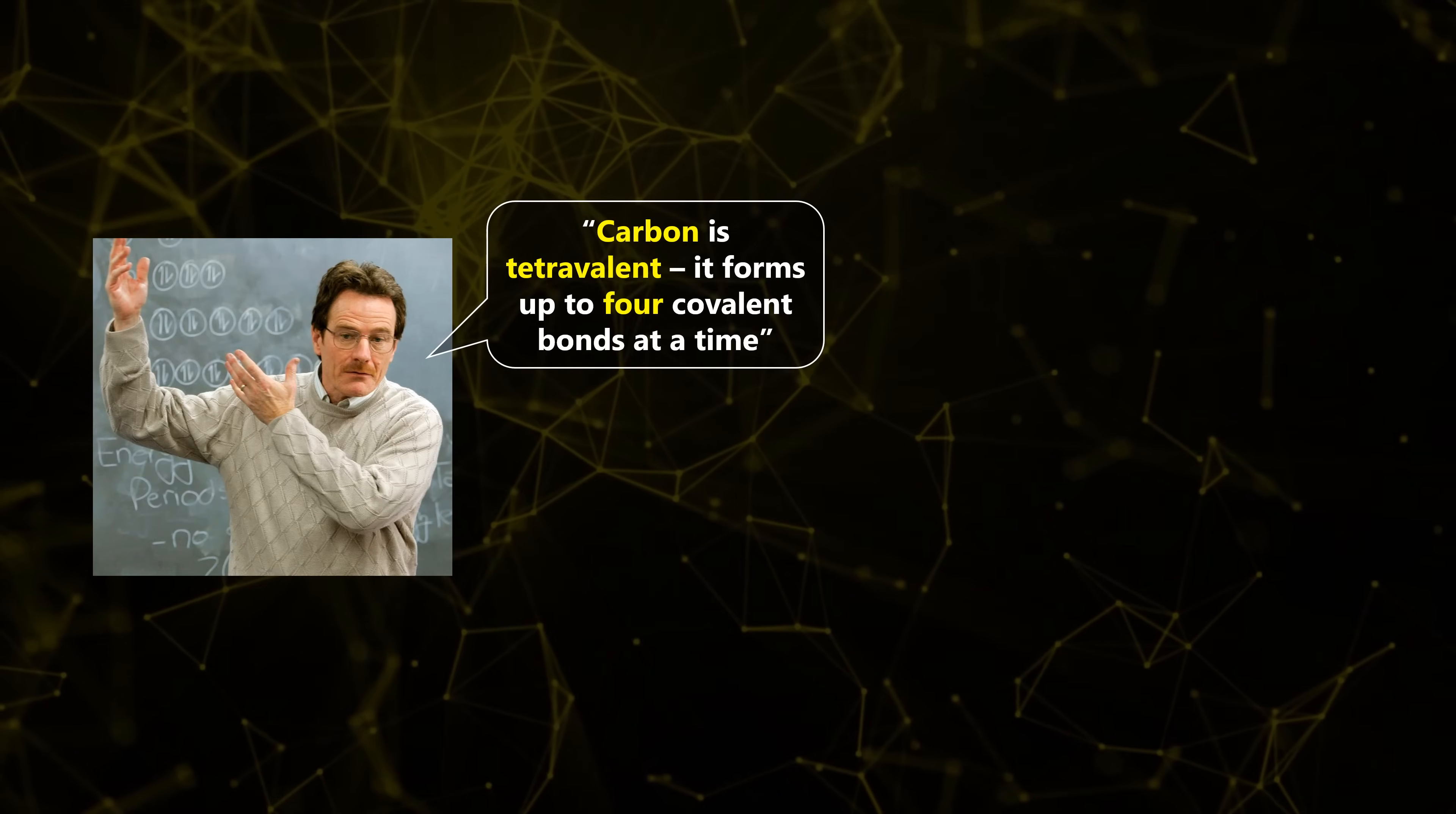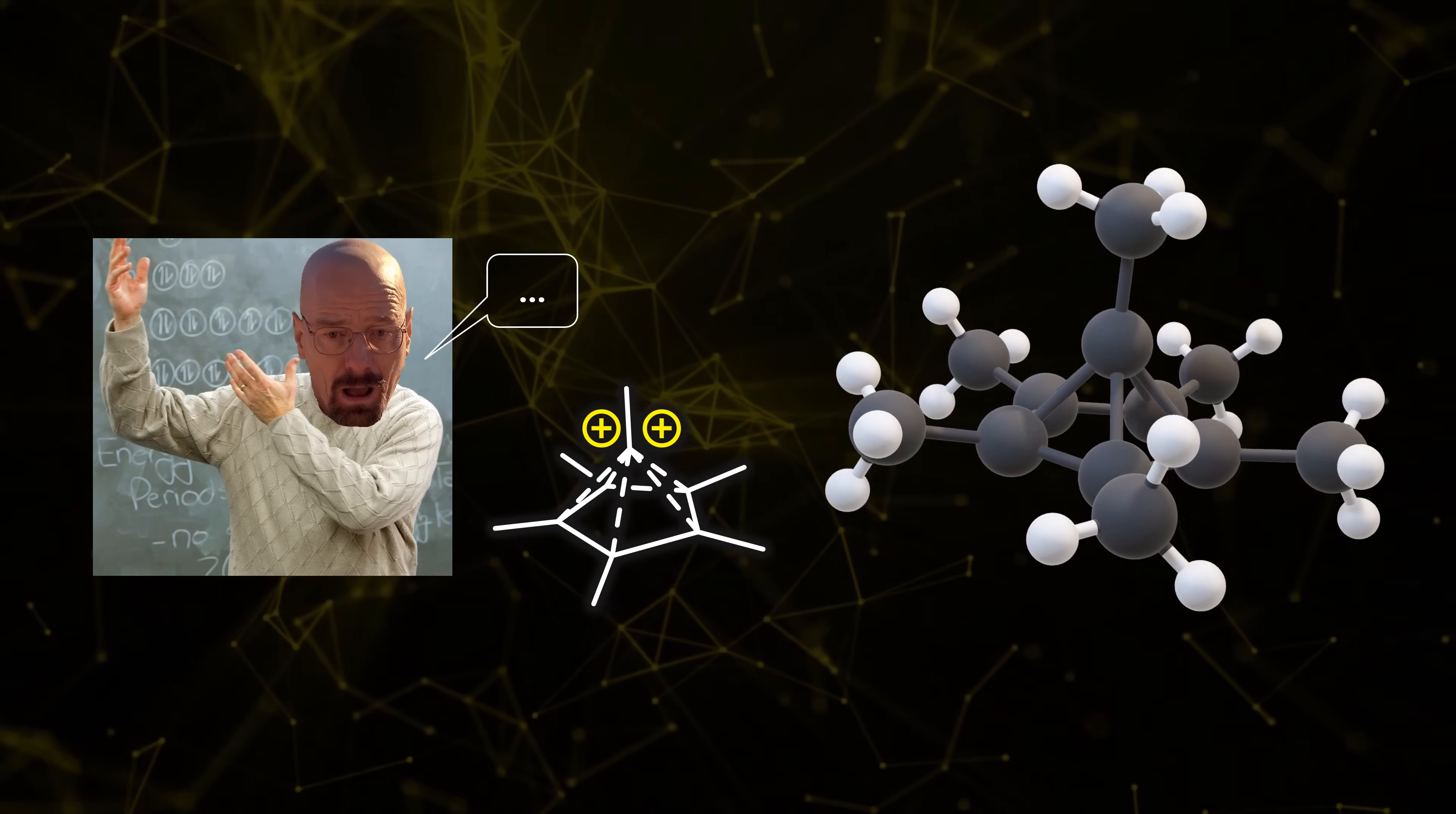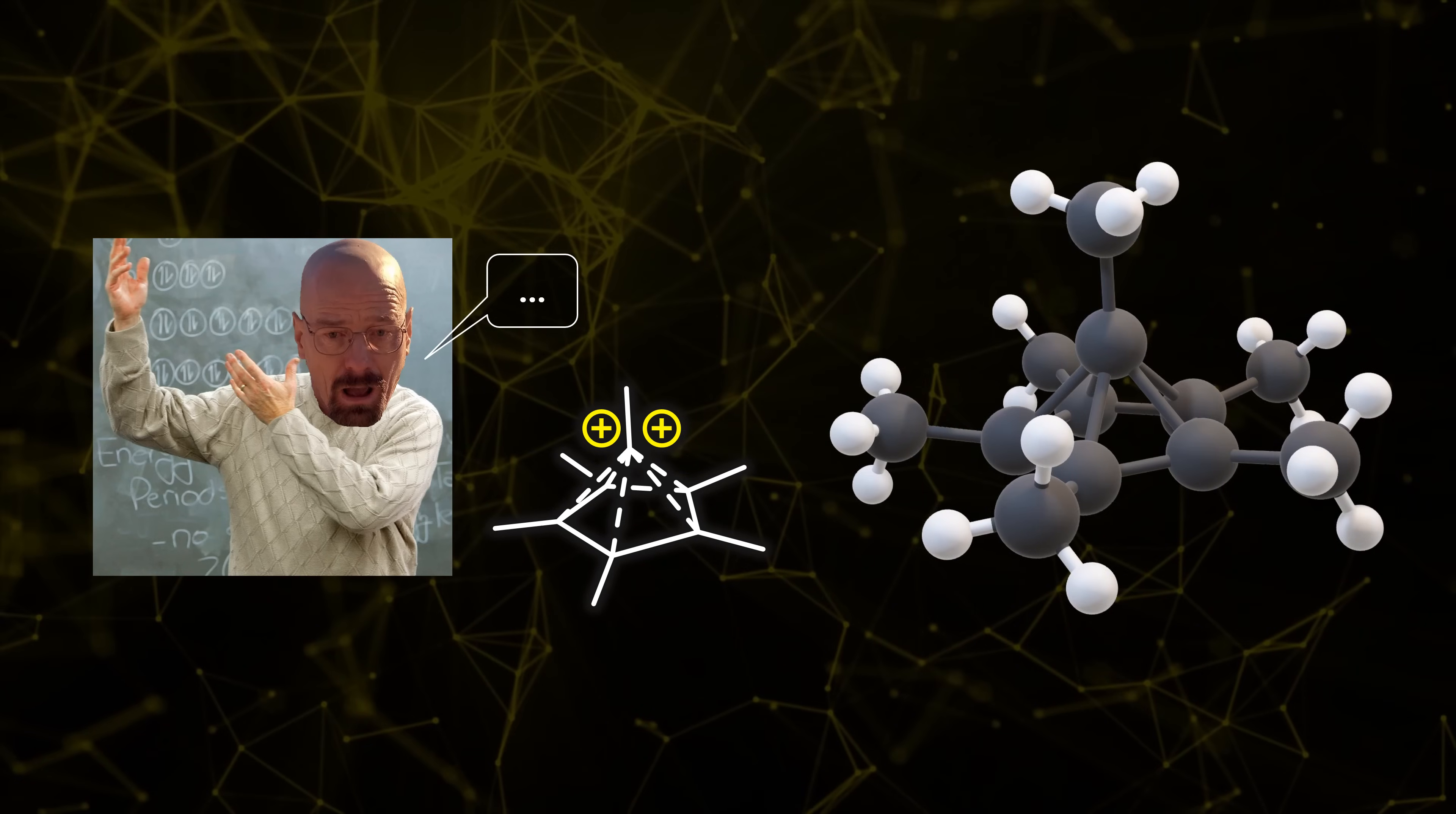We were all taught that carbon does not engage in more than four bonds. But how do we make sense of the strange hexamethylbenzene dication then? To add more confusion, this system is apparently like a transition metal complex, though no metal can be found.